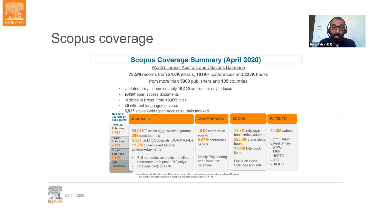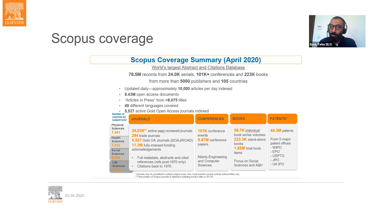Scopus can be used for different purposes: searching for documents within a specific topic, determining which journals to publish in, following authors or researchers in specific fields, and tracking and evaluating research performance of entities. Currently there are over 78 million records on Scopus from 24,000 active serial titles, along with over 100,000 conferences and over 220,000 books. Scopus covers the four main subject areas — physical sciences, health sciences, social sciences, and life sciences — with almost even distribution. It covers over 40 languages, and over 20% of titles are in languages other than English.